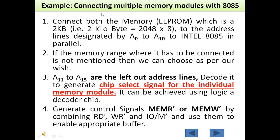Let us try to connect two EEPROMs, both having a size of 2KB. Each EPROM will have 11 address lines, denoted A0 to A10. If the memory range is not mentioned, it is as per the wish of the manufacturer to select the memory range. A11 to A15 are left out and will be used to decode both chips. We will also require control signals, memory read and memory write, to enable the appropriate buffers.